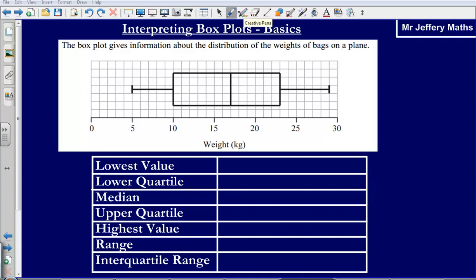So the first thing to recognize is that we've got several features of our box plot here. They correspond to the lowest value, the lower quartile, the median, upper quartile and the highest value. So let's work out what each of these mean.